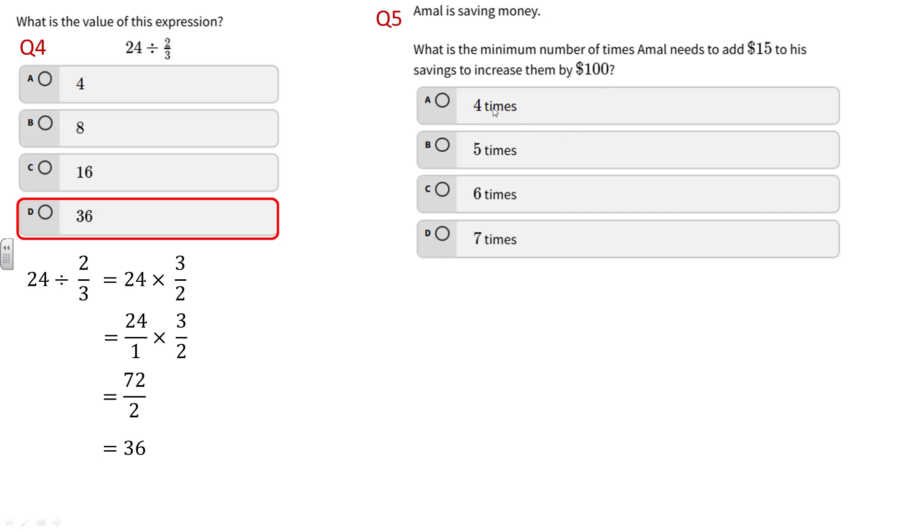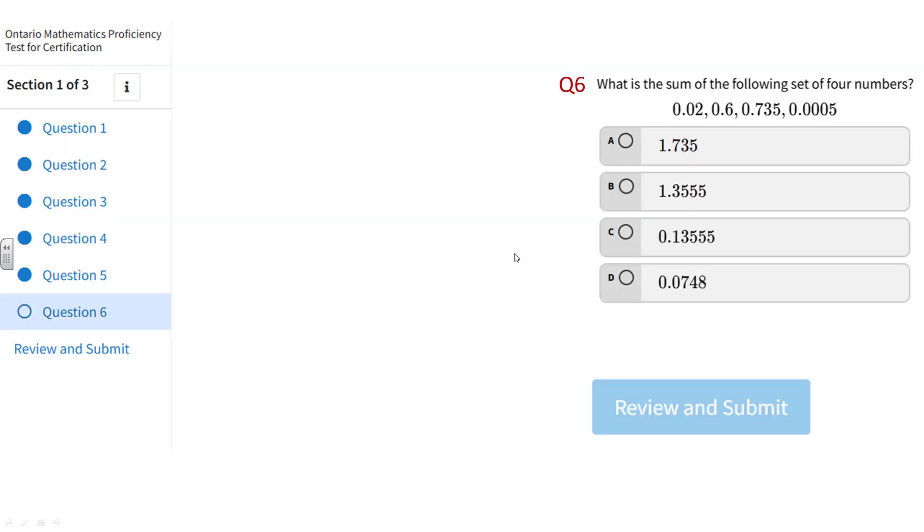Let's say he did four times: 15 times 4 is only $60, so not enough. Five times: 5 times 15 is 75, not enough yet. Six times: 6 times 15 is only 90. Seven times: 7 times 15 is 105, so that would increase it by a hundred dollars or more. The answer would be seven times.